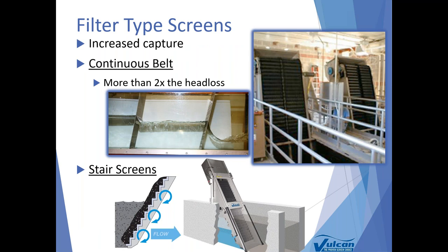Moving along to filter type screens, the advantage with any filter type screen is an increased capture that's achievable. When we say filter screen, we're alluding to the opportunity for compounding capture. We're using the screening material in the wastewater to create increased capture: a rag or wipe sticks to the screening surface, which then captures grit, hair, and finer particulate. So whereas the spacing on the screen might be a quarter inch, that rag or wipe stuck to the screening surface creates a filter, removing more material through compounding capture.